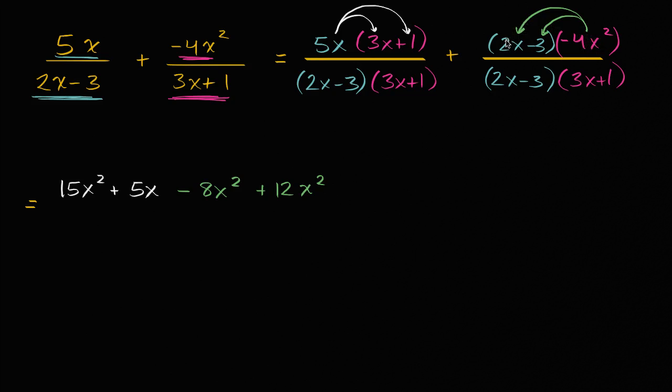The negative 4x squared times 2x is negative 8x to the third power, negative 8x to the third power. And then negative 4x squared times negative 3 is 12x squared.